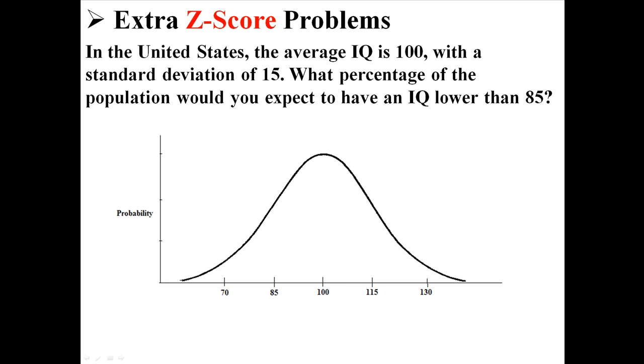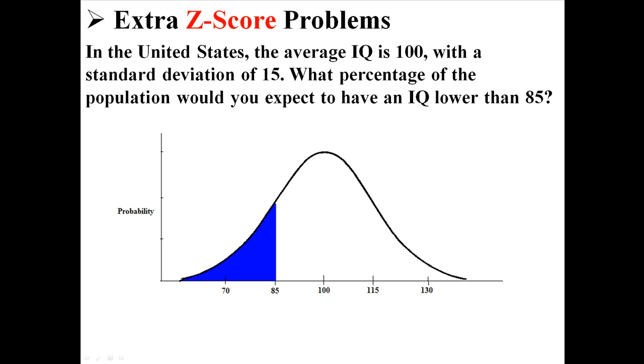So first of all, this is what the distribution looks like. We have 100 in the middle, which is the mean, and a standard deviation of 15. So there are 15 degree jumps, like 100, 115, 130. And what I'm trying to ask is, what would you expect to have an IQ lower than 85? Basically, what would you expect this blue area to be?